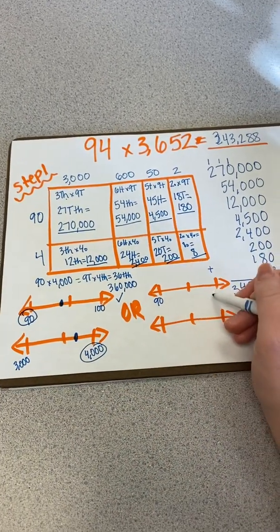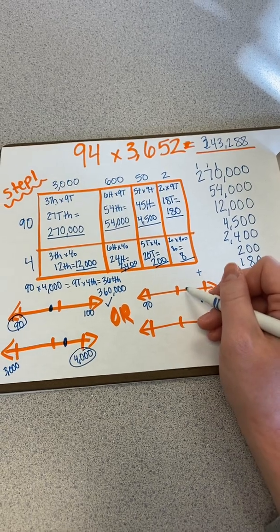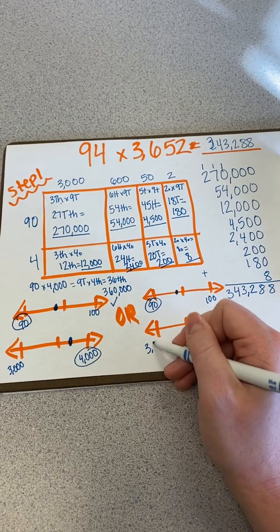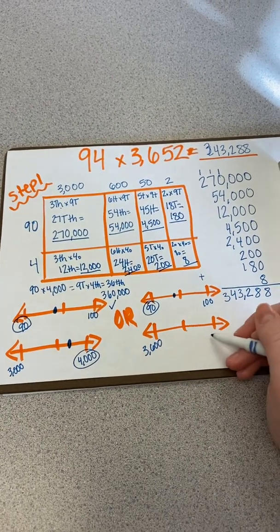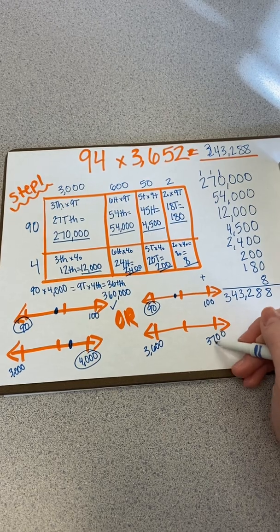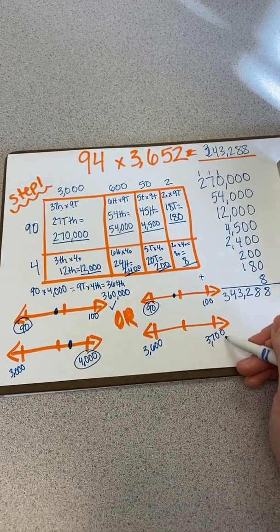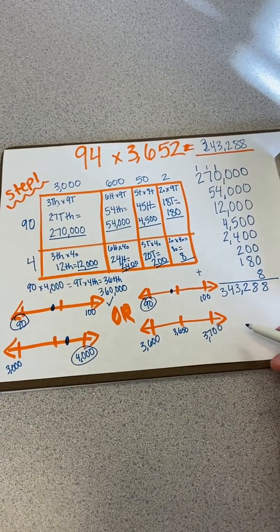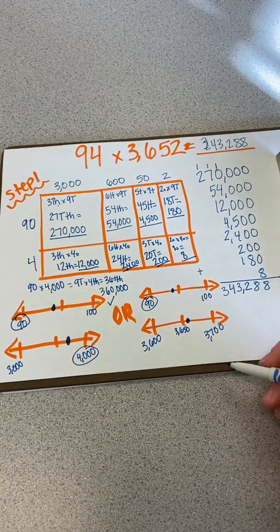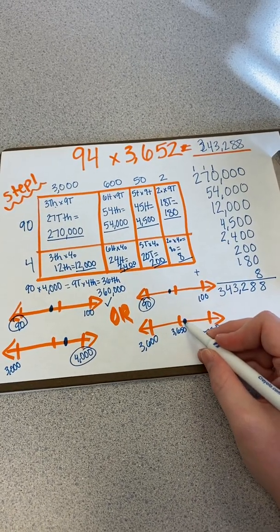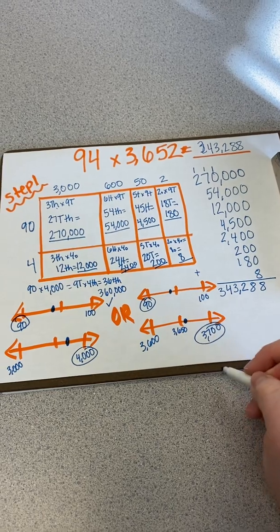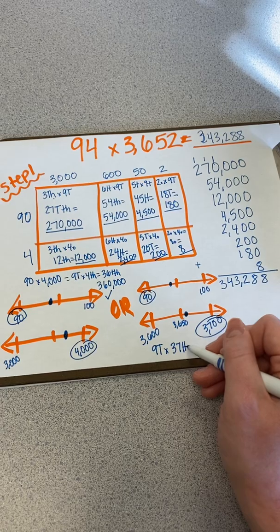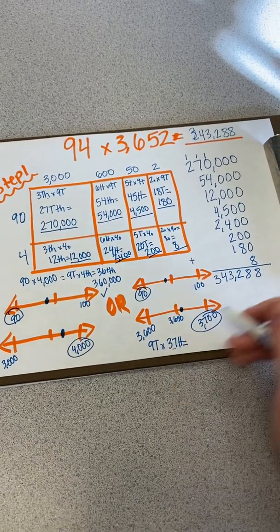But I can also round 3,652 to the nearest 100. And so to do that, I have 3,600 and then 3,700. And my midpoint here is 3,650. So that is right really close to my midpoint, but it is still greater than my midpoint. So I'm going to round this to 3,700.